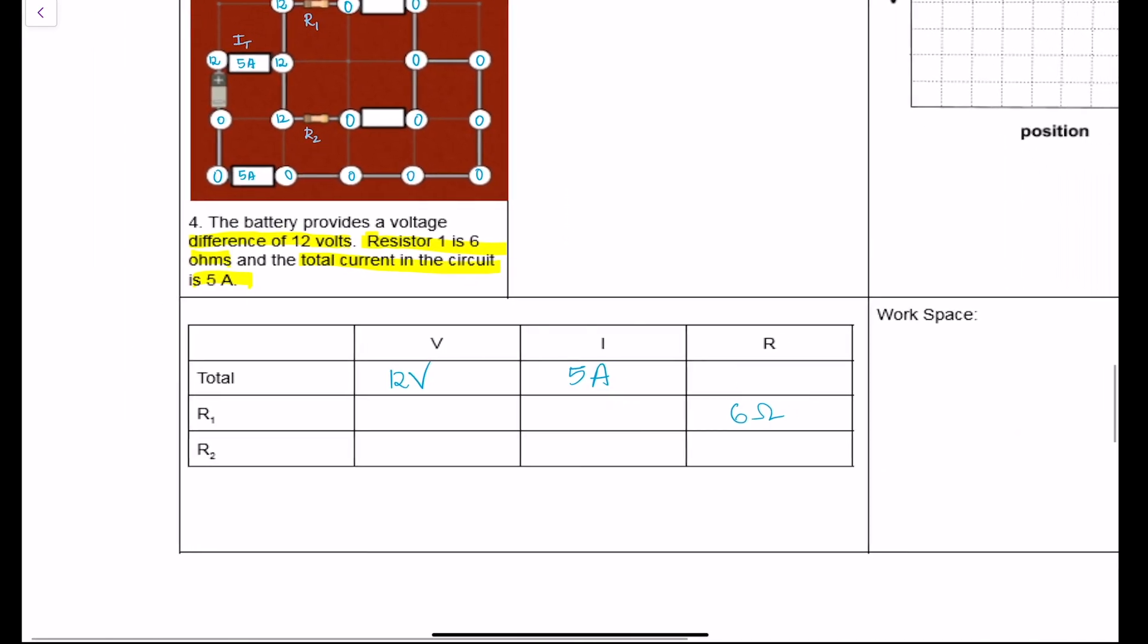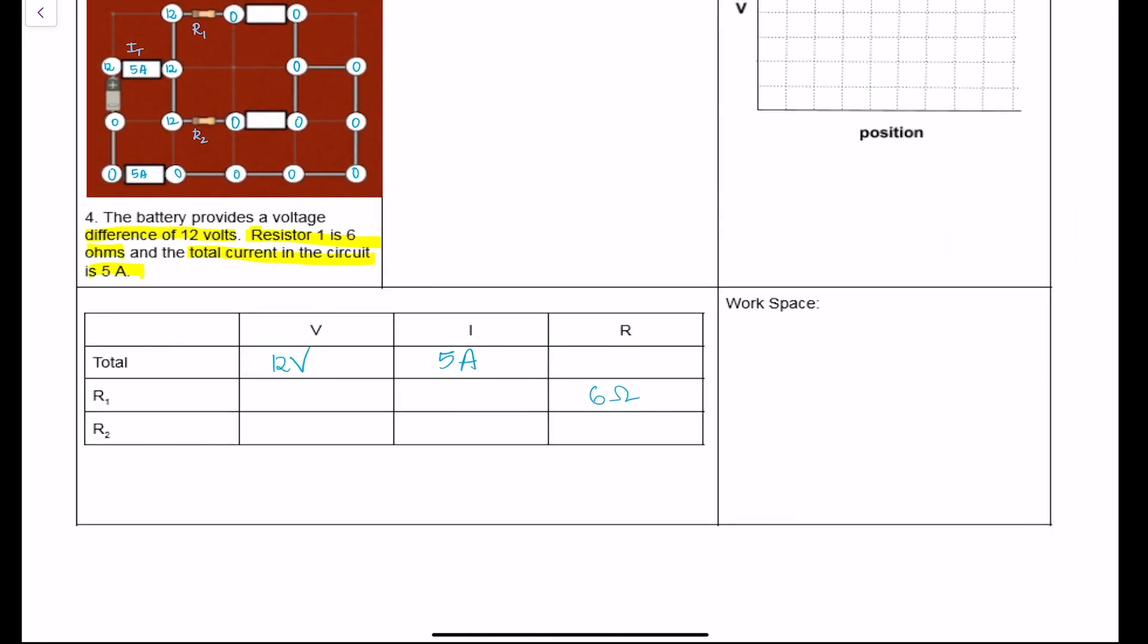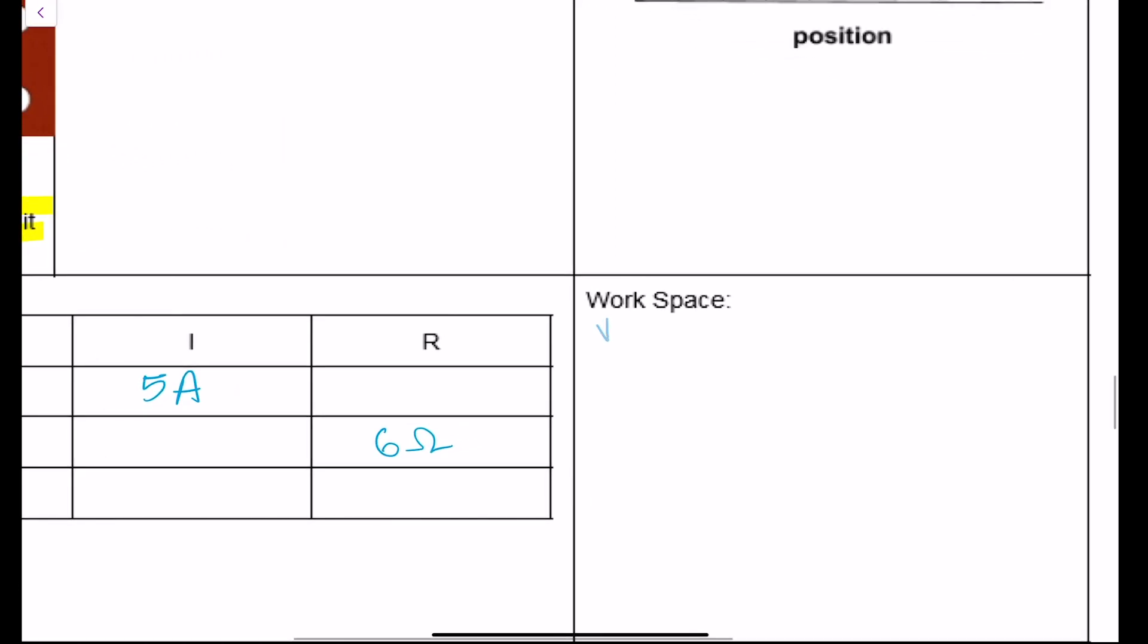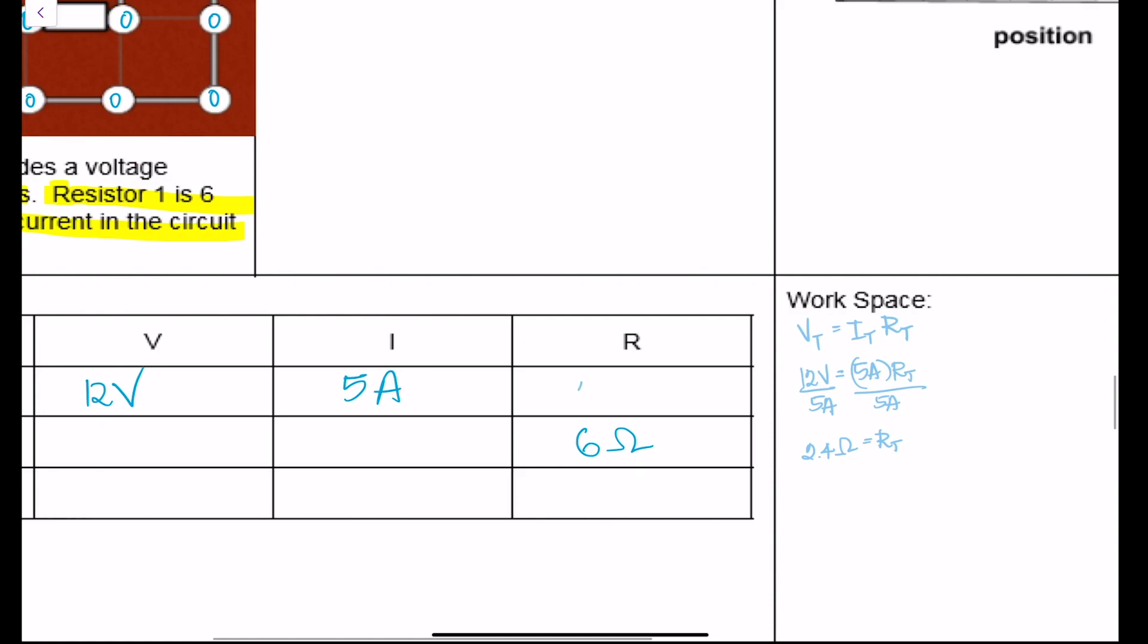Alright, so first thing we can figure out is once you have two out of the three, then you can figure for that space. The total voltage is equal to the total current times the total resistance, and we know 12 volts is equal to 5A times the total resistance. When you divide by 5A on both sides, we'll get 12 volts divided by 5 amps is 2.4 ohms, and that is our total resistance.